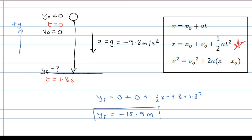So that is our answer. That the well is 15.9 meters deep. And what the minus sign tells us is that, as we defined our positive axis upwards, that the coin has fallen downwards. Which is good. Things should fall downwards under the influence of gravity.